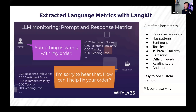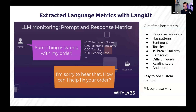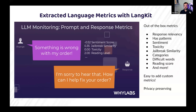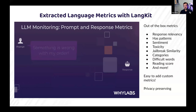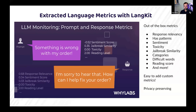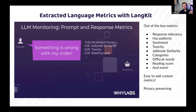Because we're just extracting these metrics and not storing the raw data of the prompts or responses, these profiles are privacy-preserving. In the Linkit profile, you're not storing raw data. This is built on the backbone of WhyLogs — our other open source library — which creates statistical profiles of your data with extracted metrics. So none of your raw data is living in these profiles, which is great for industries like healthcare and finance that can't move data out of their environment.